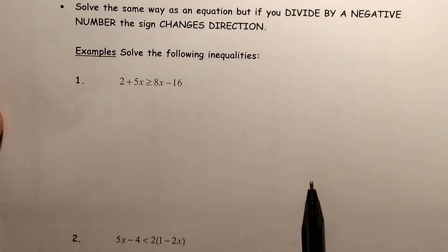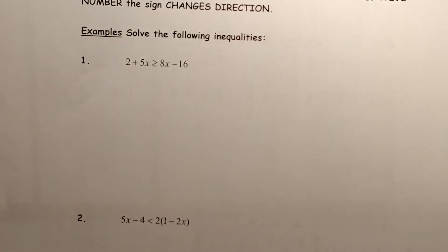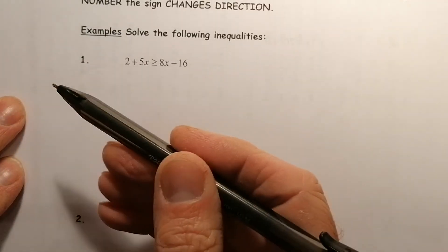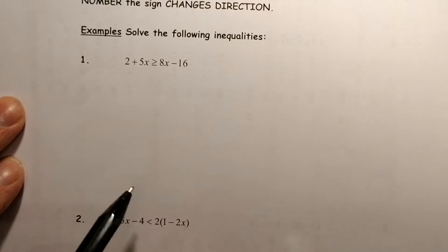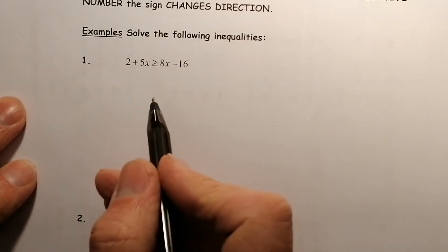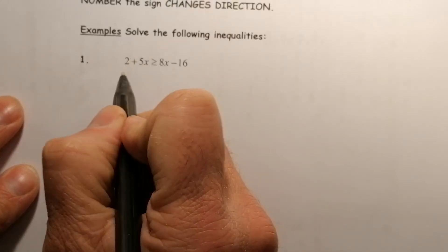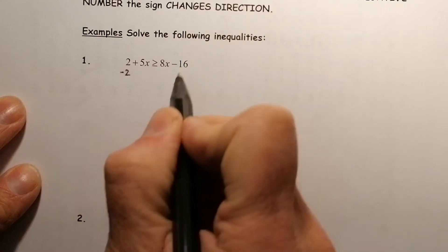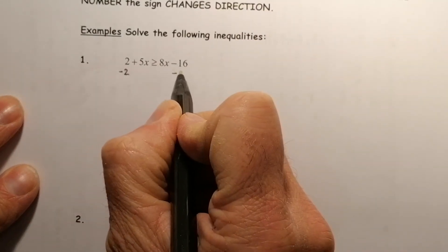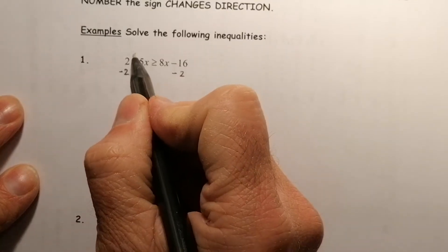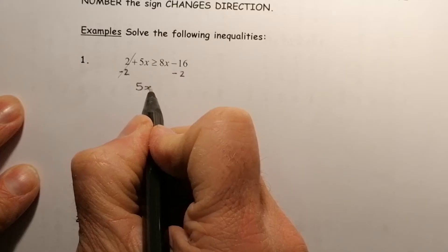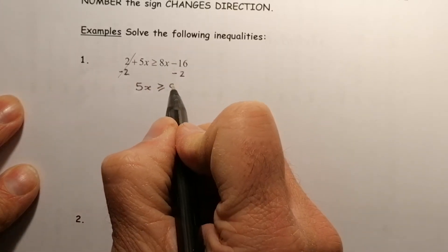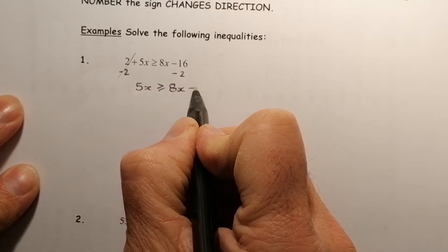The first inequality: I'm going to use a balancing method — the same way we would balance an equation. First, I want all the letters on the left-hand side and all the numbers on the right-hand side. I don't want the 2 here, so I'm going to take 2 away from both sides of the inequality. That leaves me with 5x on the left, a greater than or equal to sign, and 8x minus 18 on the right.